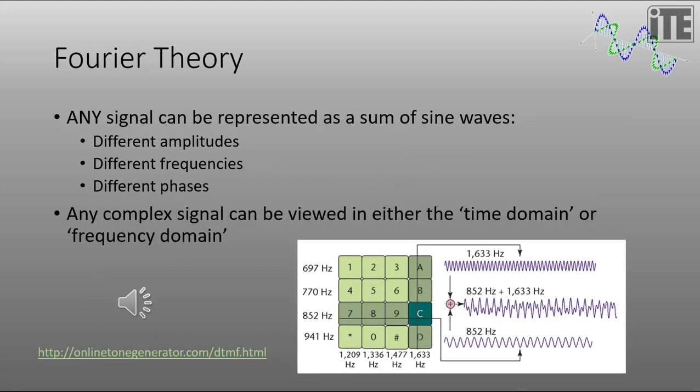Now there was a very famous French mathematician known as Fourier. And he proved that any signal, regardless of what it was, could be represented as a weighted sum of sine waves. And each of the sine waves could have different amplitudes, different frequencies, and different phases. And any complex signal made up of different sine waves can be viewed in either the time domain or the frequency domain.